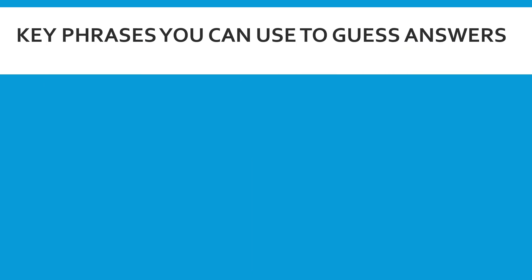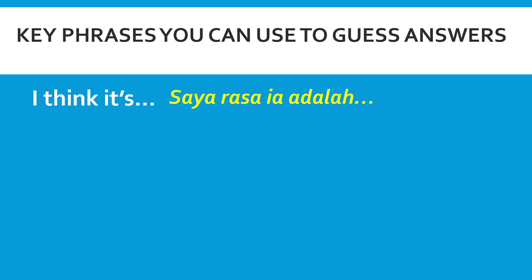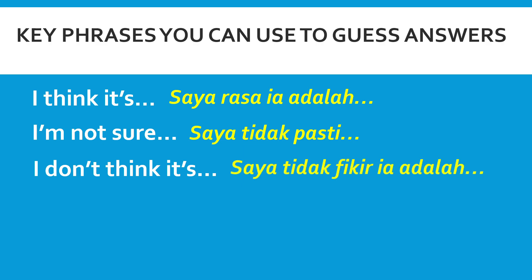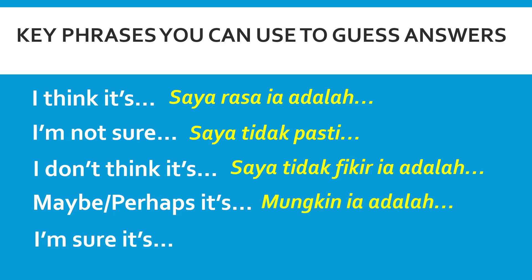Before the next activity, here are key phrases used when guessing answers: 'I think it's' (saya rasa ia adalah), 'I'm not sure' (saya tidak pasti), 'I don't think it's' (saya tidak fikir ia adalah), 'Maybe/perhaps it's' (mungkin ia adalah), and 'I'm sure it's' (saya pasti ia adalah).